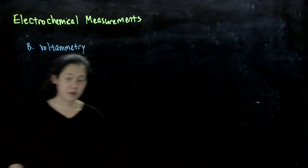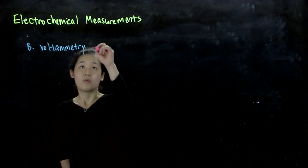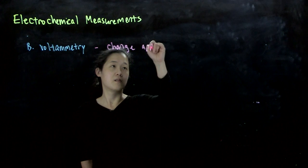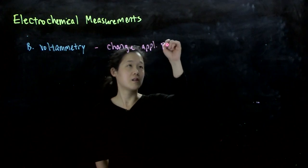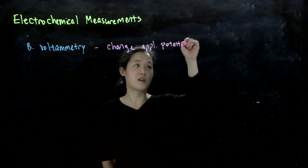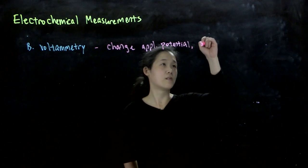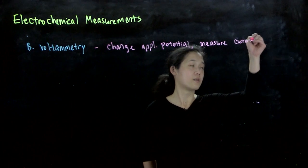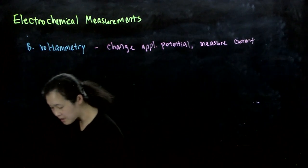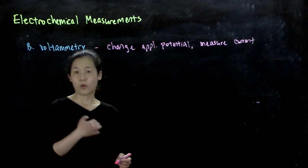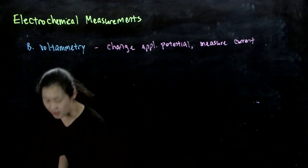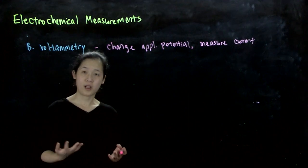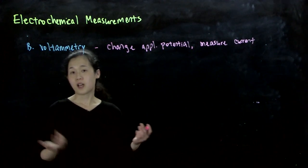So voltammetry. So typically for voltammetry, what we'll do is we'll change, apply potential, and then we'll measure a current. And this is often used to find where your reduction potentials lie of different species as well. You can also do kinetics. So electrocatalysis often uses voltammetry as a way to analyze the electrode catalyst that you're working with.